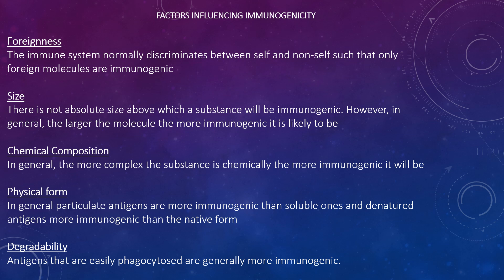For chemical composition, the more complex the substance is chemically, the more immunogenic it will be. The antigenic determinants are created by the primary sequence of residues in the polymer and/or by the secondary or tertiary structure of the molecule.